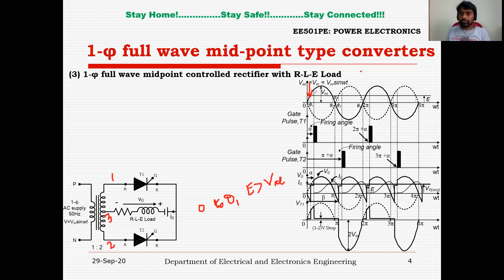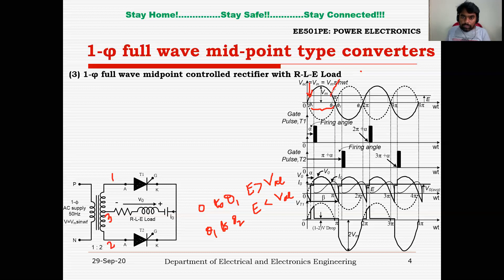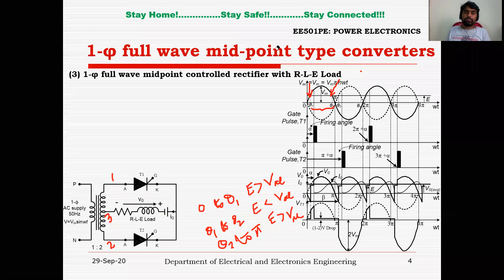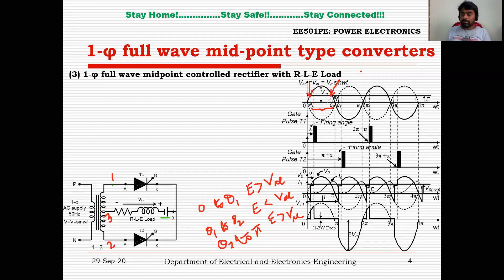From theta 1 to theta 2, the battery voltage is less when compared to the input voltage. When omega t is between theta 2 and pi, the battery voltage is more when compared to the AC voltage. By the fundamental law of electrical concept, current flow is possible from higher potential to lower potential. From 0 to theta 1, the source is at lower potential compared to the load, which consists of the battery.